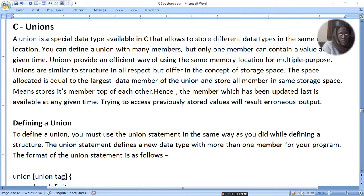Union provides an efficient way of using the same memory location for multiple purposes. Unions are similar to structures in all respects but differ in the concept of storage space. The space allocated is equal to the largest data member of union and stores all members in the same storage space, on top of each other. Hence the member which has been updated last is available at any given time.